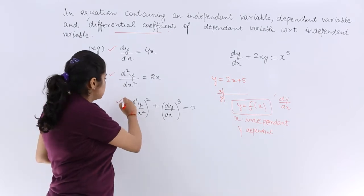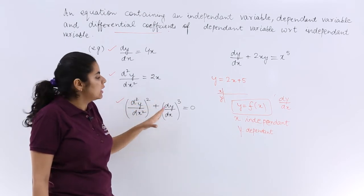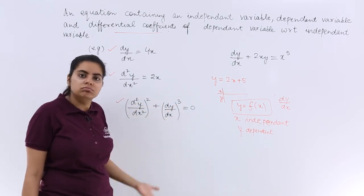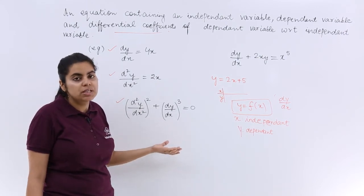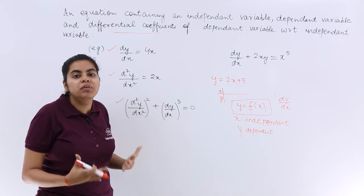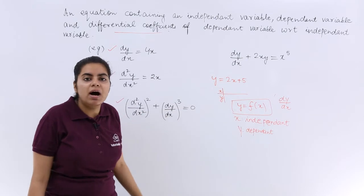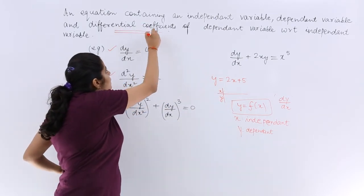Next you see this example: d2y upon dx square whole square plus dy by dx whole cube equals zero. It is an equation, has an equal to, there are differential coefficients. So what is important in a differential equation? You may miss the independent variable or some parts like dependent, but differential coefficient will always be there.